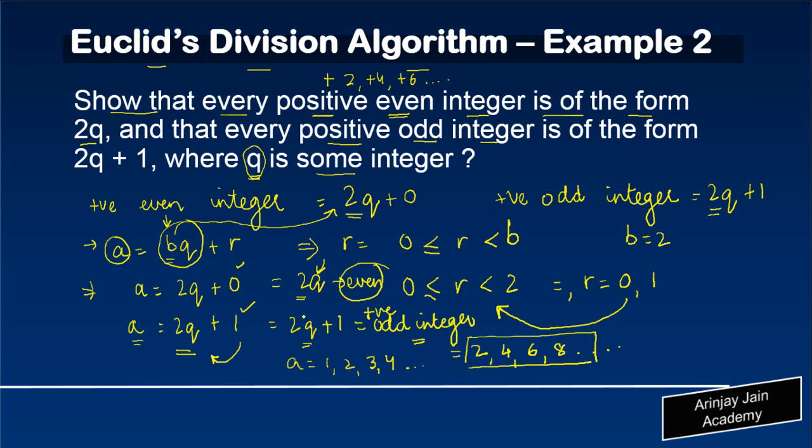And hence, we have proved that every positive even integer is of the form 2q, where q is some integer, and every odd integer is of the form 2q + 1.